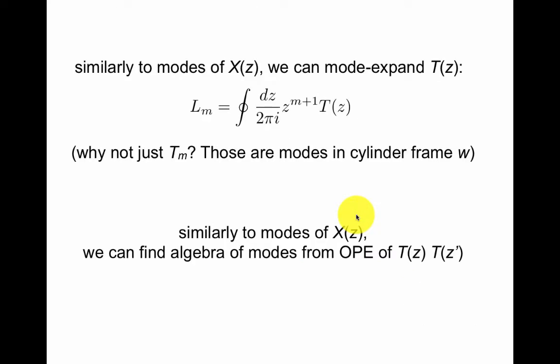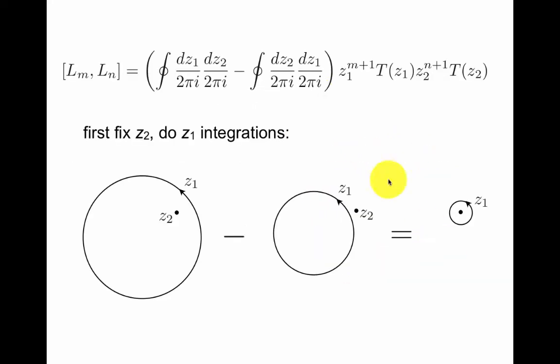Similar to modes of xz, we can mode expand t. And those modes are called L. So the modes of x were called alpha and the modes of t are called L. They could have just been called t. That name is reserved for modes in the cylinder frame w that we can reach from a conformal transformation z is e to the minus iw. The L's are similar to modes of x.